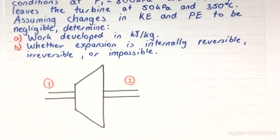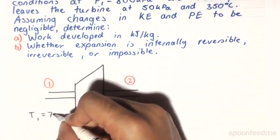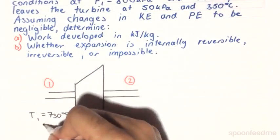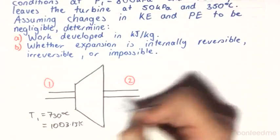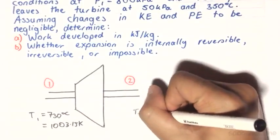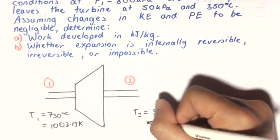And just to collate our information, over here we have T1 is going to equal 730 degrees Celsius, which is equal to 1003.15 Kelvin. T2 is going to equal 350 degrees Celsius, which is equal to...